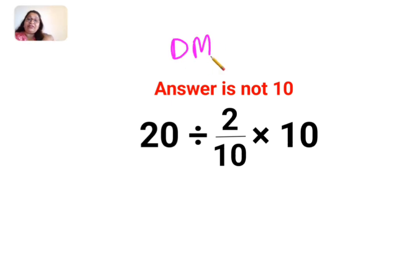Division and multiplication hold equal precedence. So in sums like these it is mandatory that you have to go from left to right. Whatever operation happens first on your left hand side has to be done first.